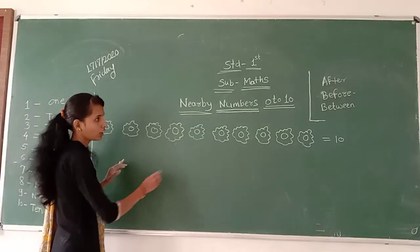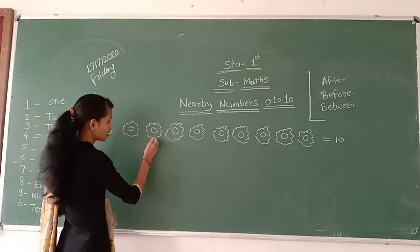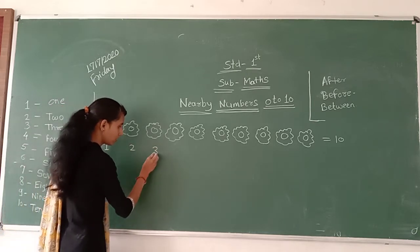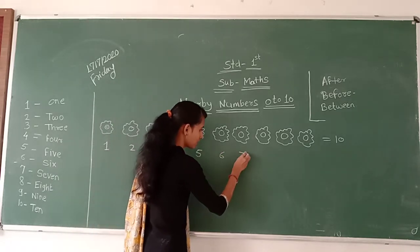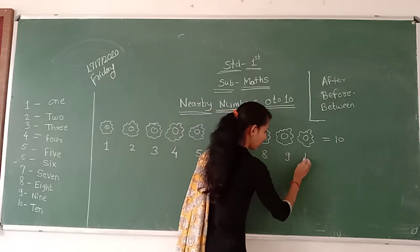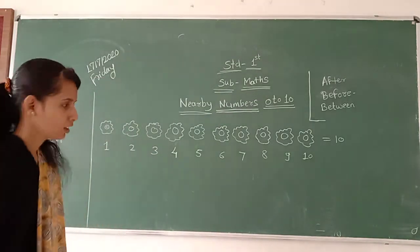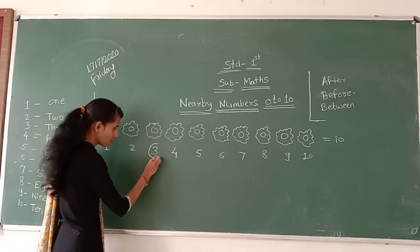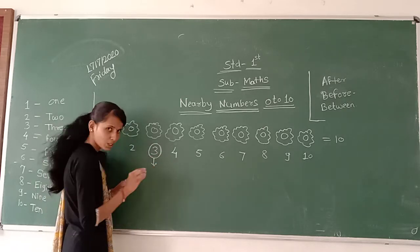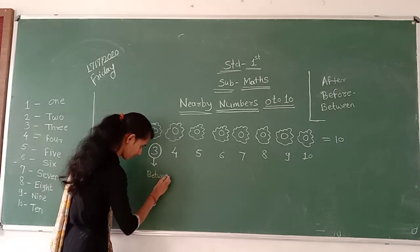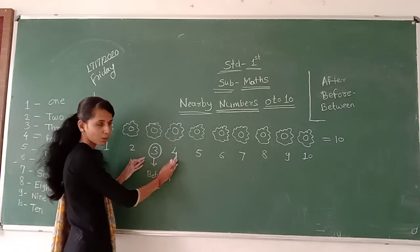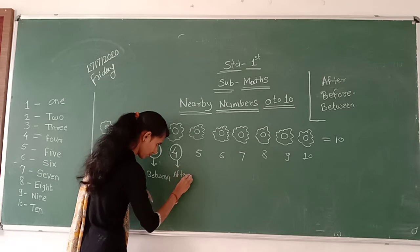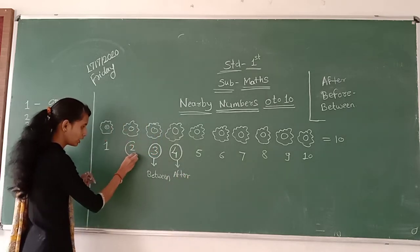See here, we learn after, before, and between numbers. 1, 2, 3, 4, 5, 6, 7, 8, 9, and 10. 3 is the between number — means middle number. After number is 4 — 4 is the after number. And before number is 2 — 2 is the before number.